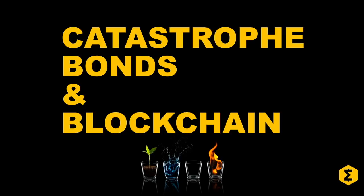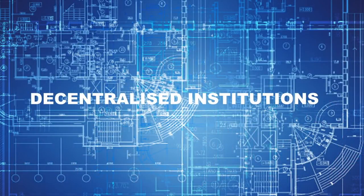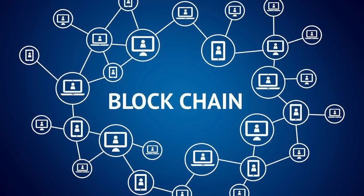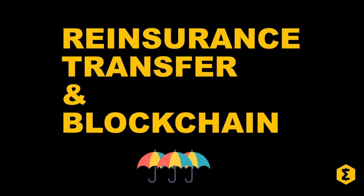Hey guys, it's MJ and as I said in my previous video on catastrophe bonds, the financial revolution has begun. Blueprints for decentralized institutions are being drawn up and more securities are finding their way onto the blockchain. In this video, I want to talk about reinsurance transfer and how blockchain can decentralize this process.